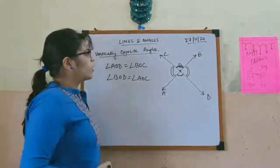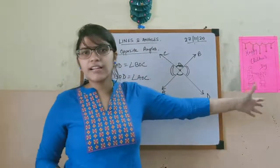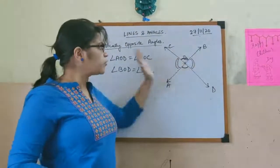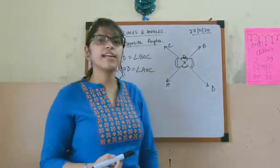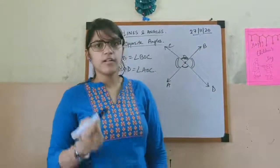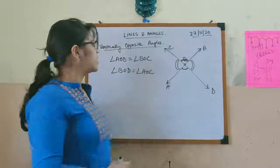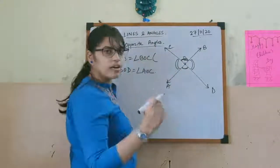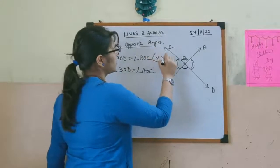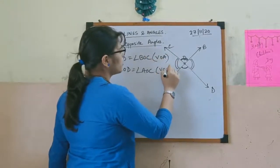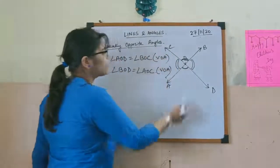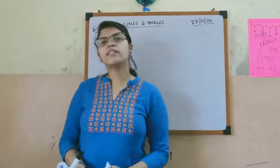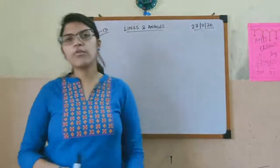So these two angles are also equal. The opposite pair of angles are equal whenever we have two straight lines intersecting at a point. Since they are equal, the reason for them being equal is vertically opposite angles, or in short, VOA. So that was the concept of vertically opposite angles.